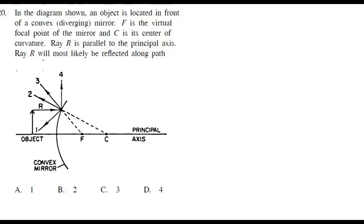Ray R is most likely to — we know that parallel rays, after reflection in a convex mirror, appear as if passing through the focus. Since this is a convex mirror, the ray cannot go inside the mirror. So after reflection, it will pass as if going through the focus. The third ray option is the correct answer.